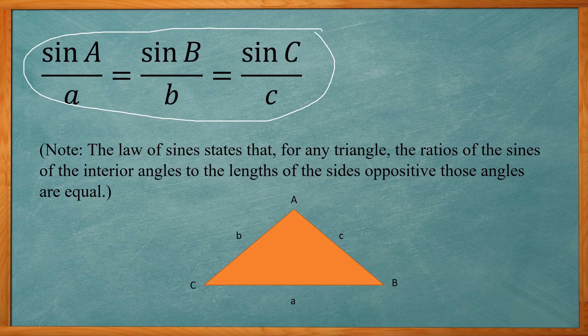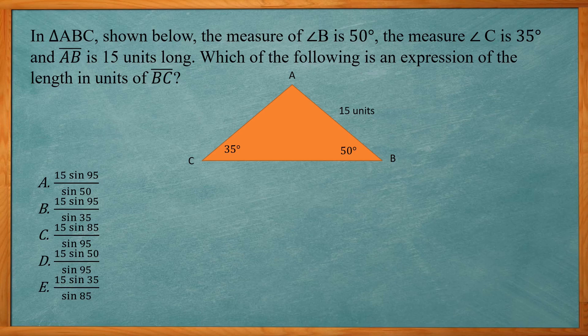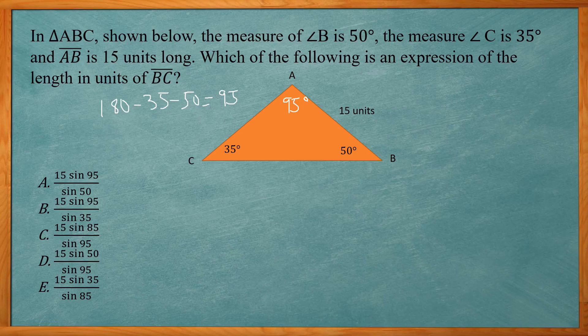Let's take a look at an example ACT problem. In triangle ABC shown below, the measure of angle B is 50 degrees, measure of angle C is 35 degrees, and line AB is 15 units long. Which of the following is an expression of the length in units of BC? First, we want to figure out the measure of angle A. Remember a triangle has 180 degrees in it, so it's 180 minus our other two angles: minus 35 minus 50. That gives us 95, so this is 95 degrees right here, angle A.